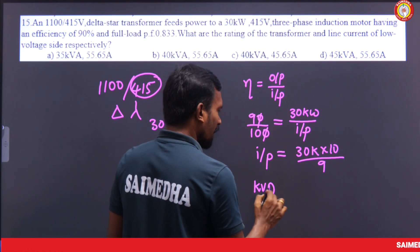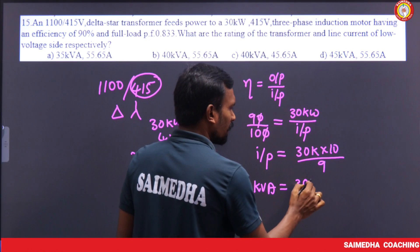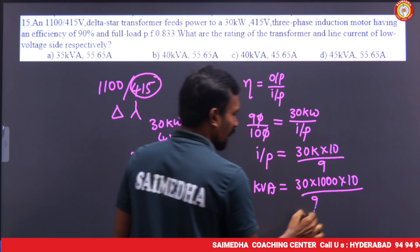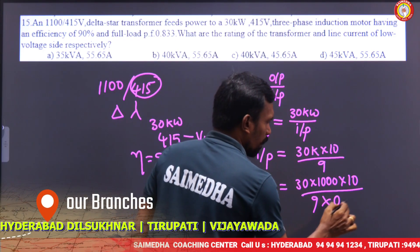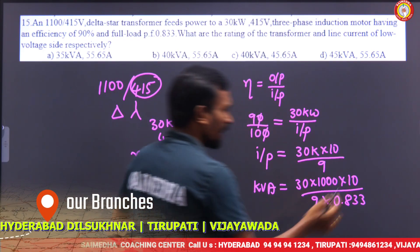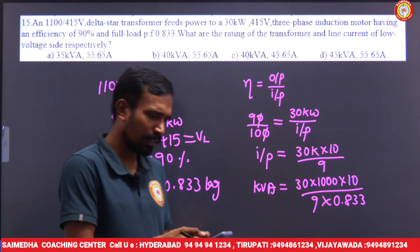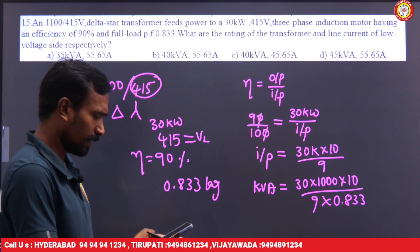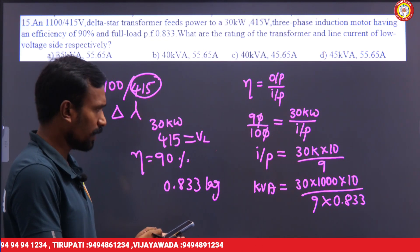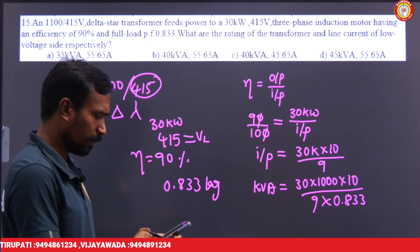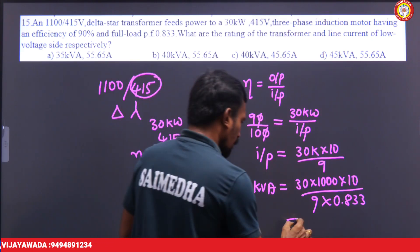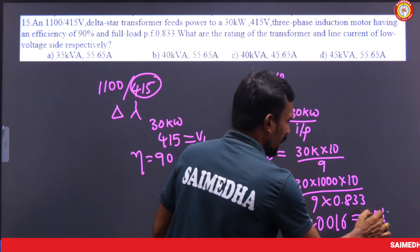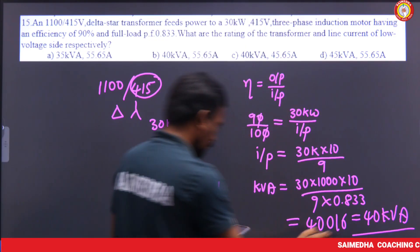KVA equals 30,000 into 10 divided by 9, then divided by the power factor 0.833. That gives 30,000 × 10 ÷ 9 ÷ 0.833, which is approximately 40,016 — which is nothing but 40 KVA. That is the transformer output.